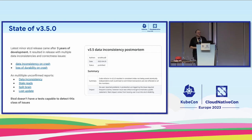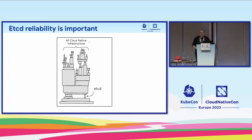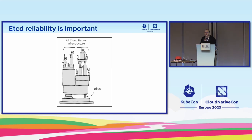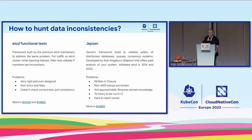We have multiple reports that are currently very hard to reproduce and understand. etcd doesn't have a test suite capable of detecting this class of issues — I expect most projects and databases don't have these kinds of tests. But compared to most databases, etcd is the building block for Kubernetes, which is the building block for the whole cloud-native infrastructure. We cannot let this slide — we need to do better.